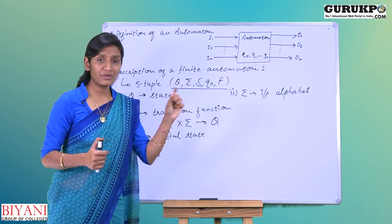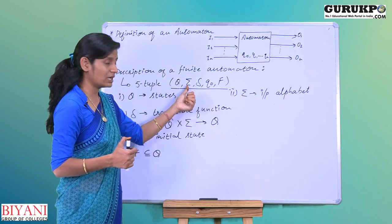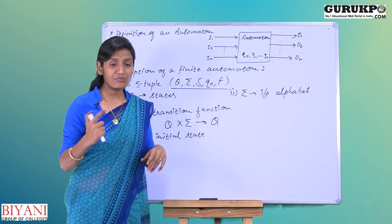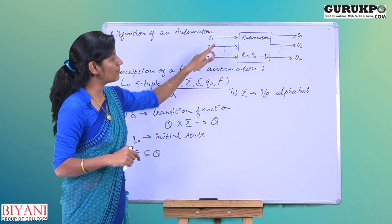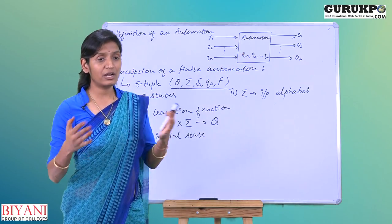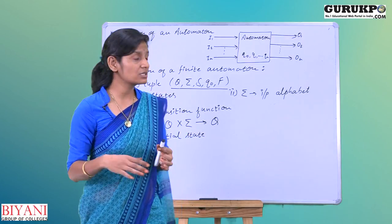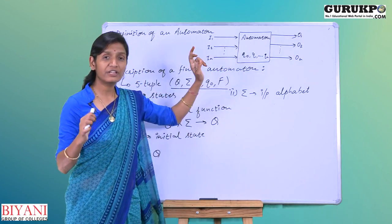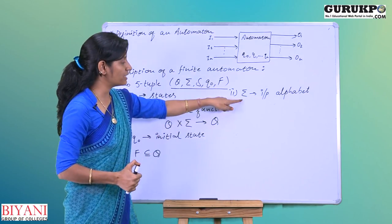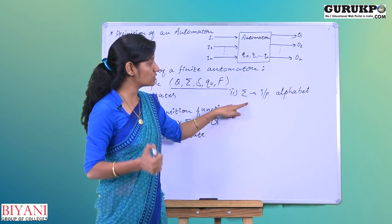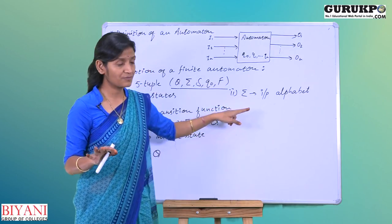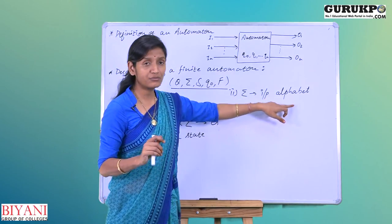Second is summation. We call this input alphabet. Input alphabet means whatever possible inputs can be given to our automata - whether they are numeric 0 or 1, whether they are alphabets or whether they are any kind of character. Whatever you give to that machine as an input will be considered as the input alphabet. It is a non-empty set of input symbols, which we collectively call input alphabet.